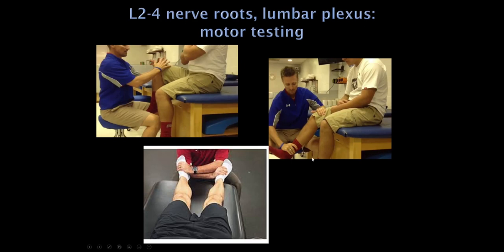For L2-L3-L4 nerve roots and the lumbar plexus, three good muscles to examine are: hip flexion (iliacus), knee extension (quadriceps), and adduction (adductor magnus — ask the patient to push the knees together while the examiner tries to push them apart). These muscles will be weak with either L2-L3-L4 radiculopathies or lumbar plexopathies.